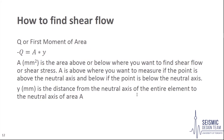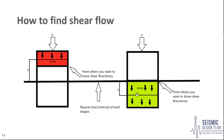To properly understand how to find shear flow, we must first understand how to find the first moment of area, Q. Q is defined as A multiplied by y-bar. A is the area above or below where you want to find shear flow or shear stress — above if the point is above the neutral axis and below if the point is below. y-bar is the distance from the neutral axis of the entire element to the neutral axis of area A. In the red shape, the area is above the element's neutral axis, so y is measured above; in the green shape, the area is below, so y is measured below.